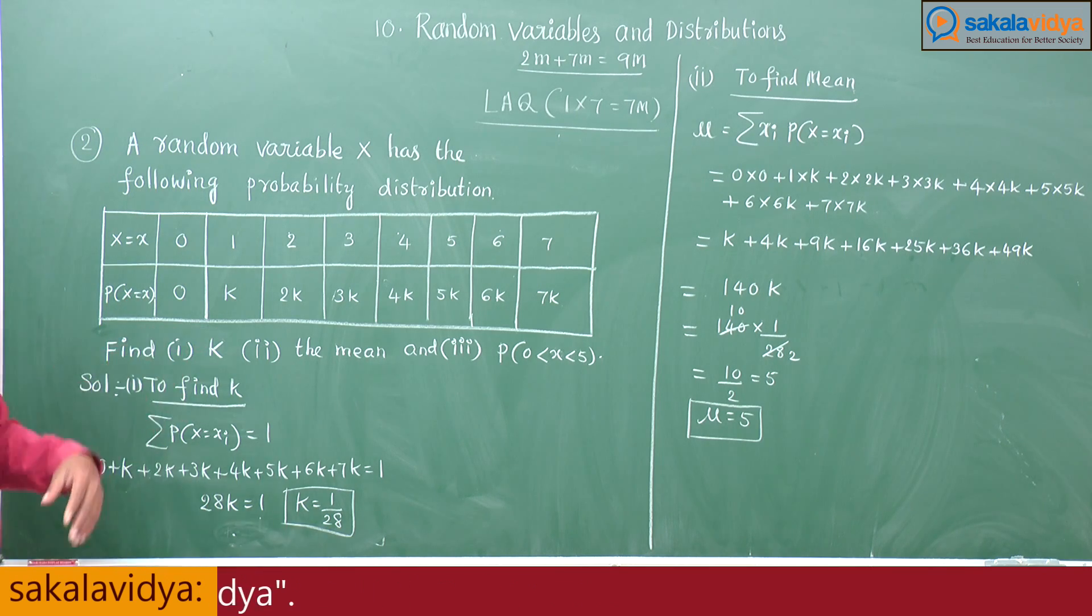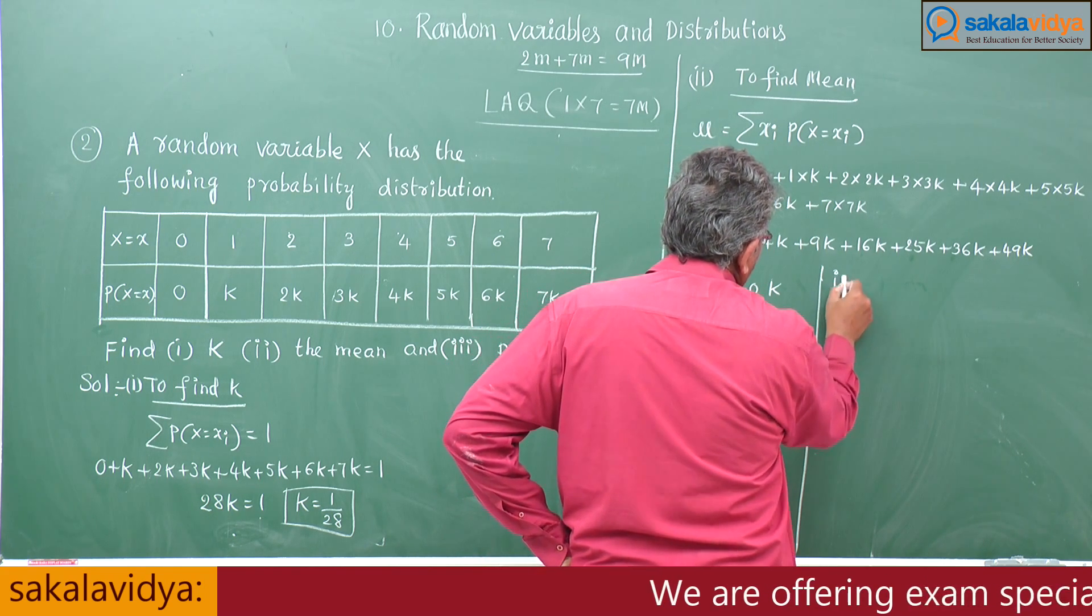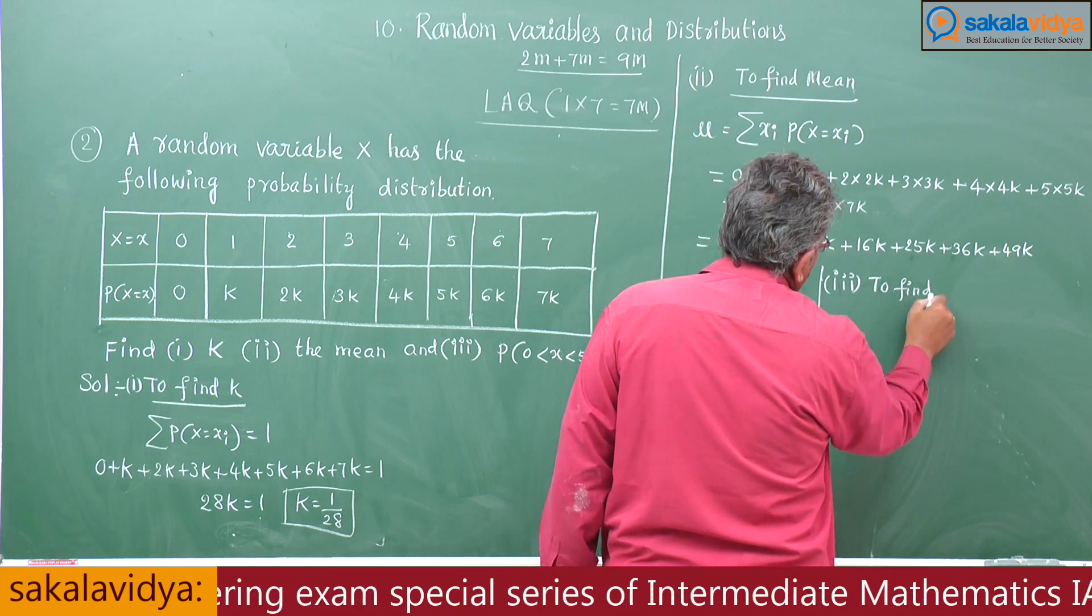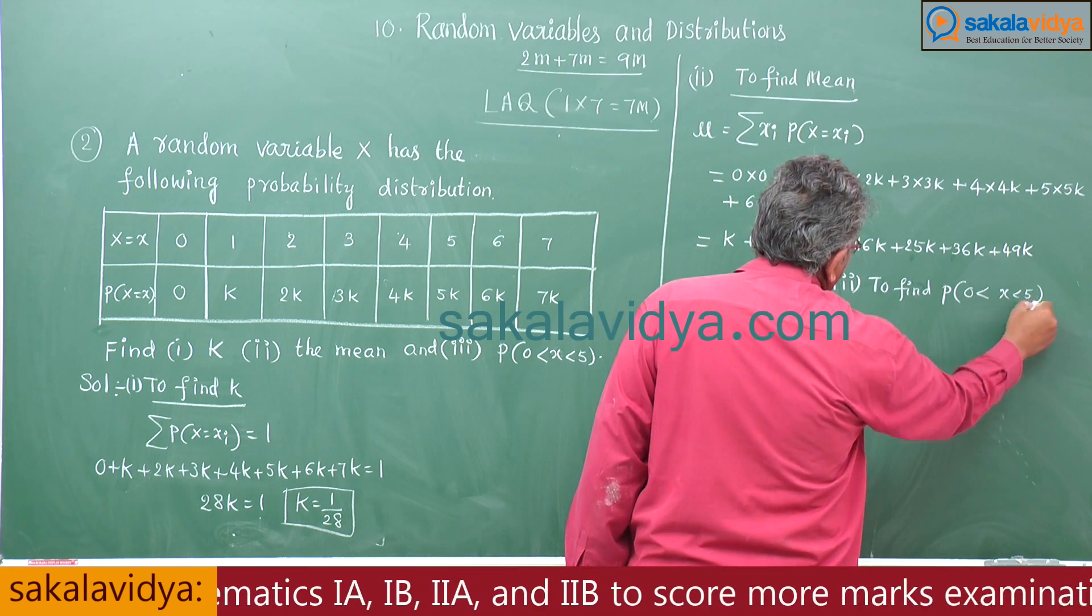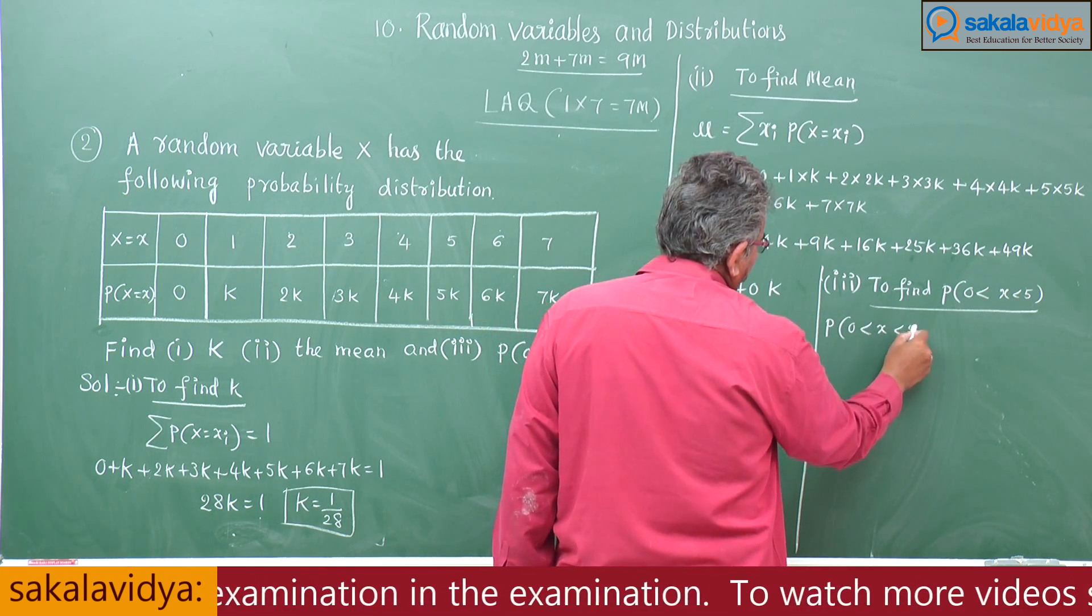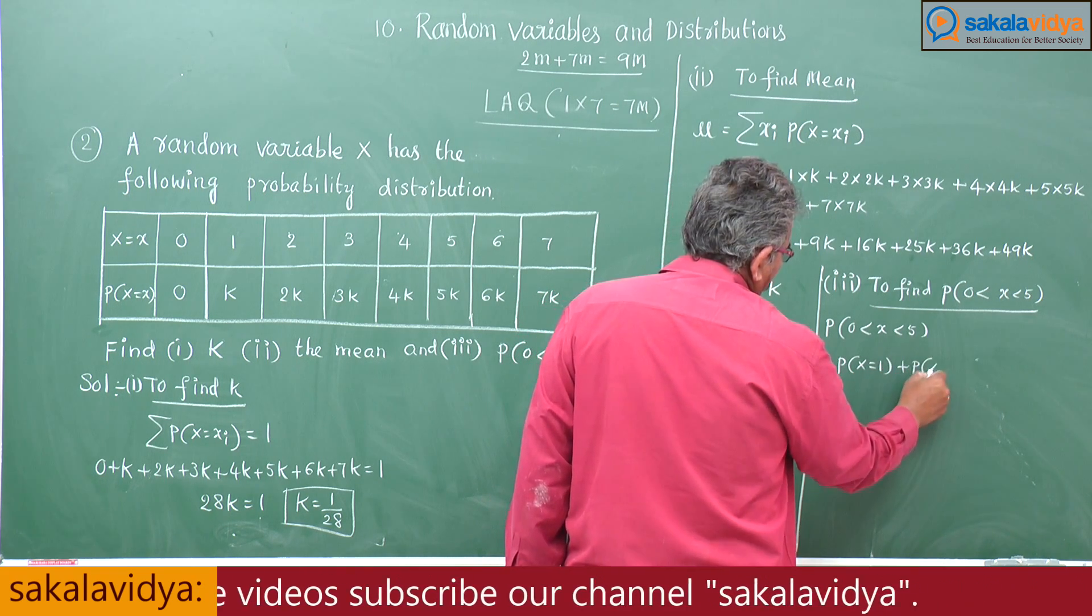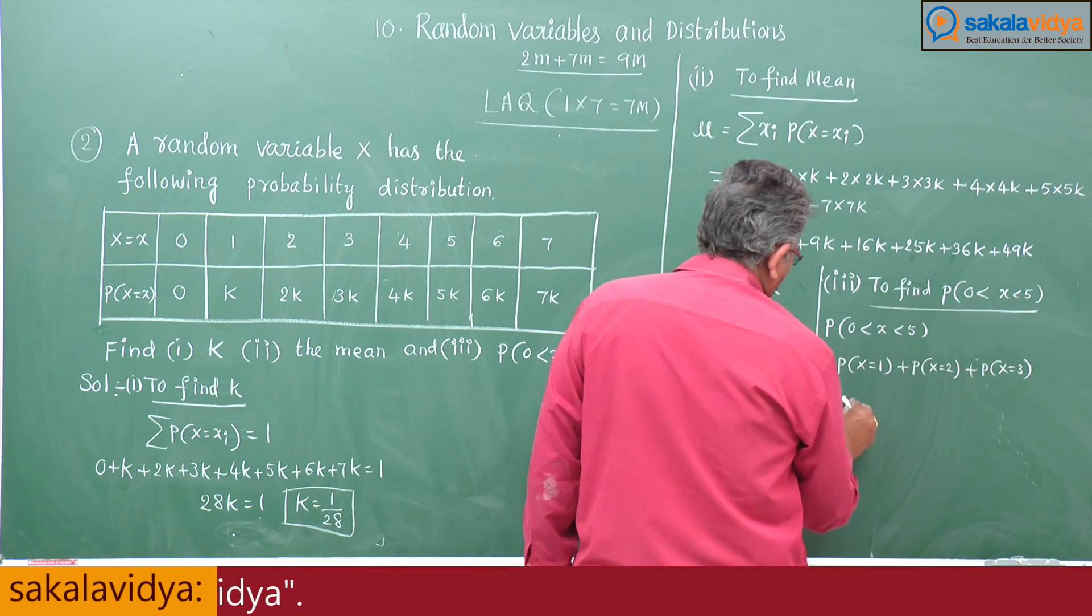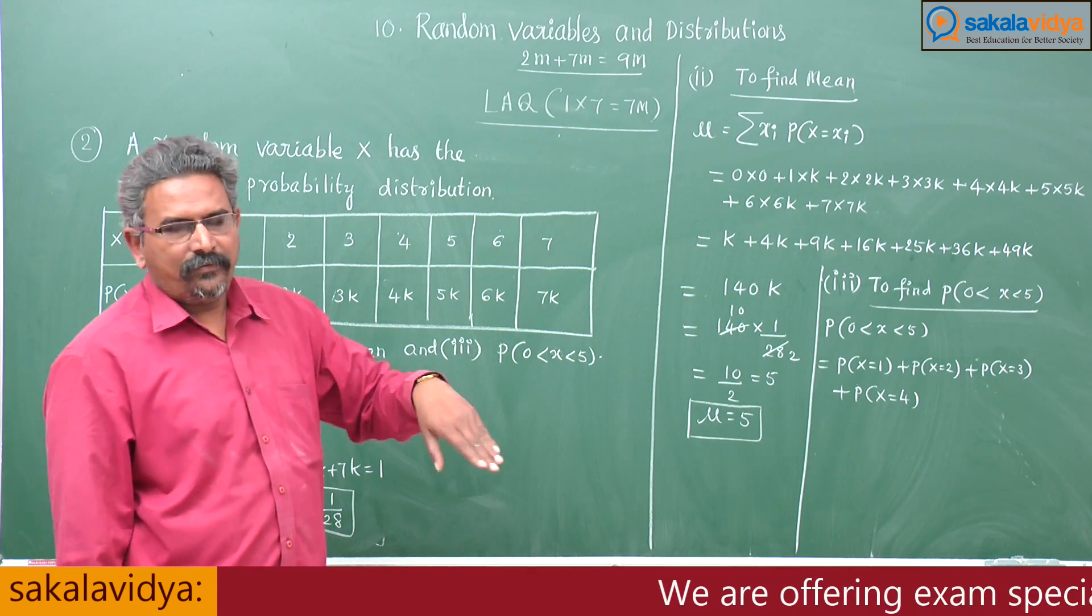Now, what we have to find out. The third one is to find P of 0 less than X, X less than 5. So P of 0 less than X, X less than 5 means P of X equals 1 plus P of X equals 2 plus P of X equals 3 plus P of X equals 4. 0 and 5 are not included.